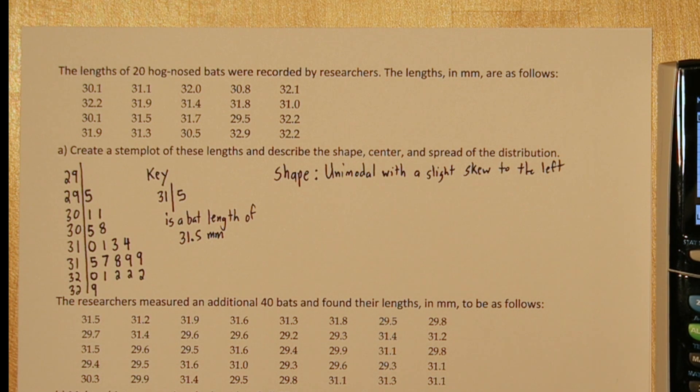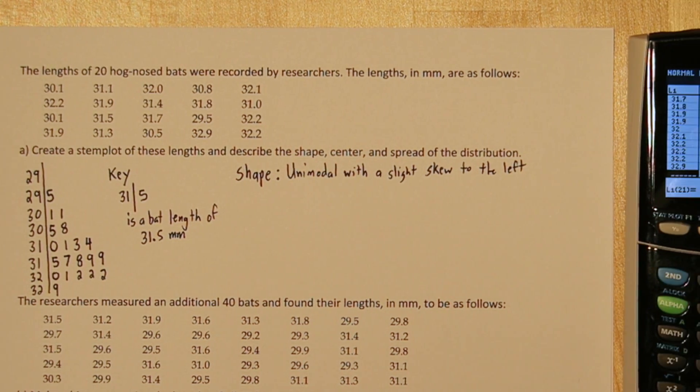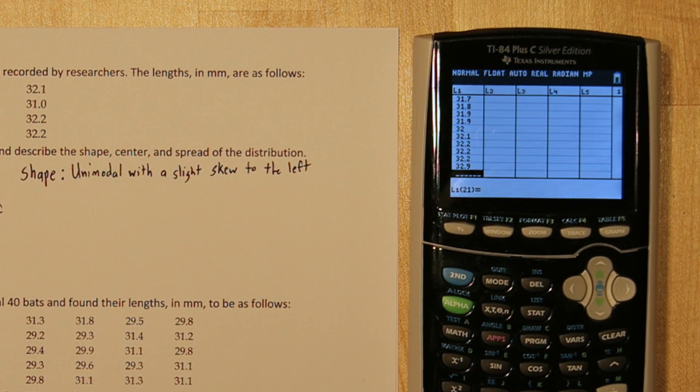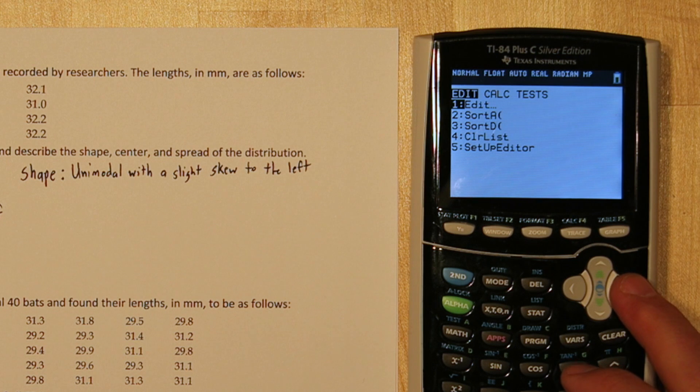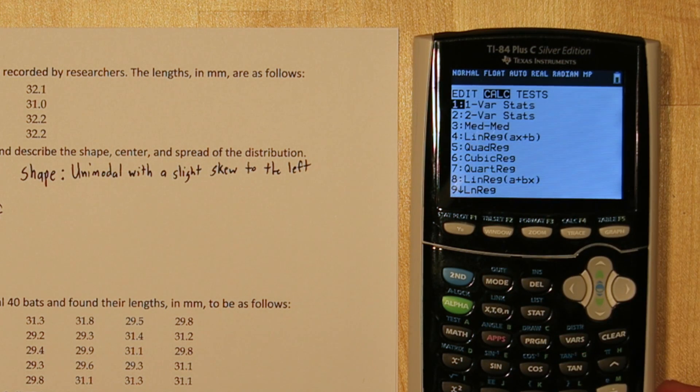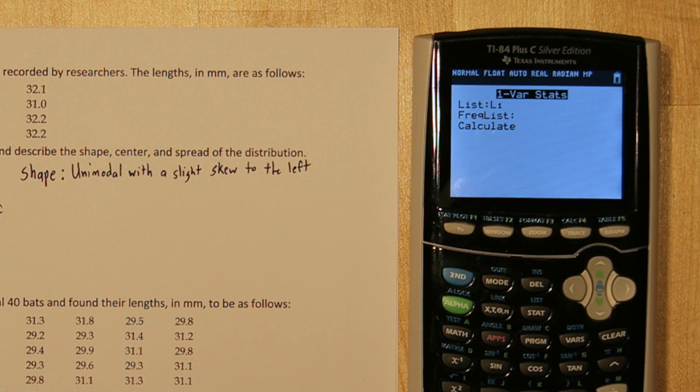Now to find our center, it's a good thing we already have all the data input into list one, because we can quickly find some measures of center. To talk about the center, let's use our calculator again. If you press stat, and you go over to calculate, and one var stats, one variable statistics. It already has list one, which is where our data is input. So we'll go down to calculate and press enter.